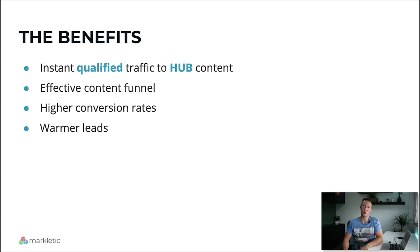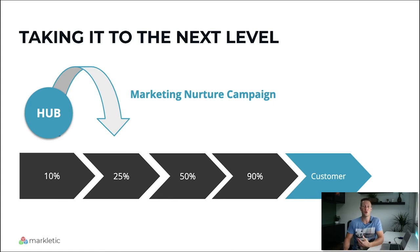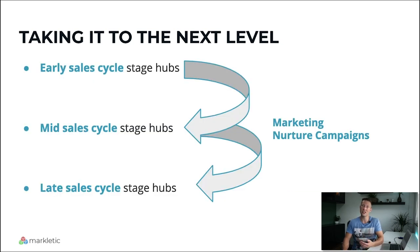That's the basic version of the hub and spoke model. How do you take it to the next level? B2B sales cycles are complex and can take many months to complete. You can take it further by developing hub content depending on the stages of the buyer's journey. If someone downloads hub content designed for early stage prospects, you need an effective marketing nurture program to guide them to download content designed for the next sales stage. So you need early, mid, and late stage hubs, and your marketing nurture program should guide prospects through each stage. If you implement this correctly, you'll make life much easier for your sales team — and you need an excellent understanding of the buyer's journey to do this effectively.